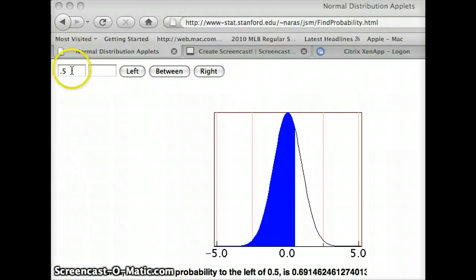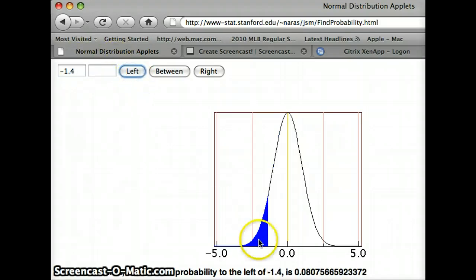So here we go. I'm going to plug negative 1.4 in the left box. And we're going to ask how much is to the left of negative 1.4. And you'll see our picture. This is approximately where negative 1.4 is. And the number that we get there is 0.0808.